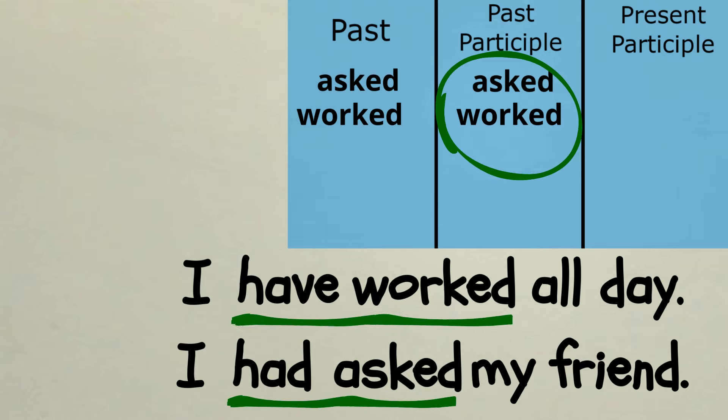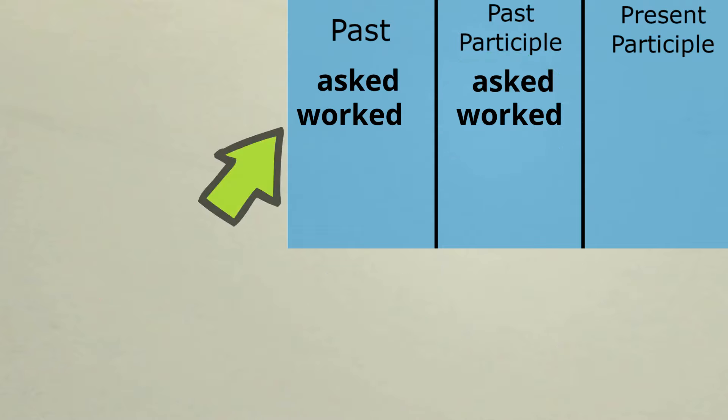You can see from these two examples that past participles are used to form present perfect and past perfect tense. In these two examples, the past tense form of the verb and the past participle are the same. So why is it important to know the difference between the two?